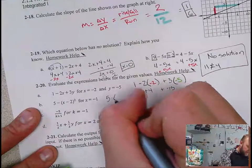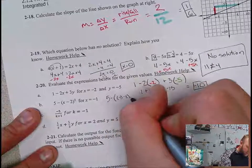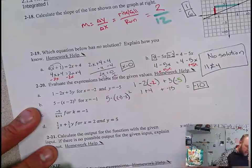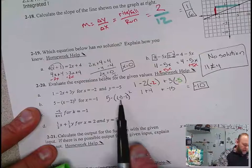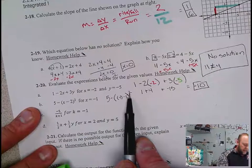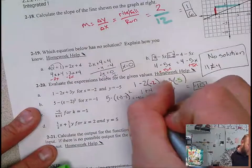Next problem. 5 - (-1 - 2)². Negative one minus two is negative three. Negative three times negative three is positive nine. Five minus nine is negative four.